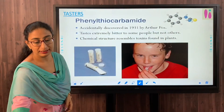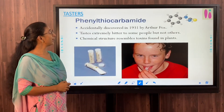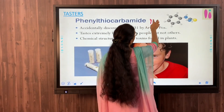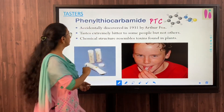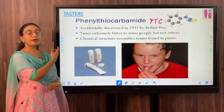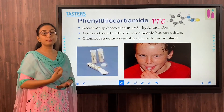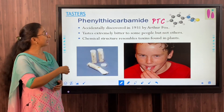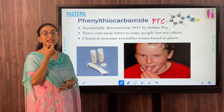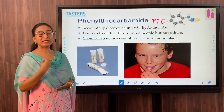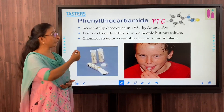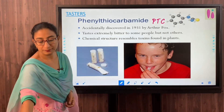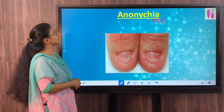Tongue roller: those people who can roll their tongue are called rollers, and people who cannot are called non-rollers. This is a good example of monogenic inheritance. The next example is tasters — there is a substance called phenylthiocarbamide, in short PTC. According to whether people can taste PTC or not, we can classify them as tasters and non-tasters. Tasters can taste PTC and feel a bitter sensation, whereas people who cannot feel any taste when they put PTC into their mouth are called non-tasters.